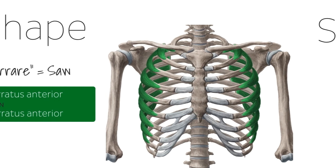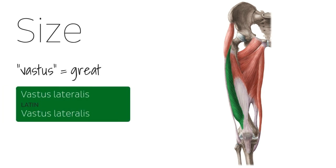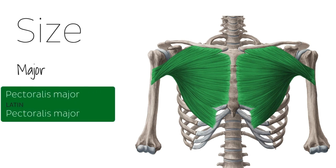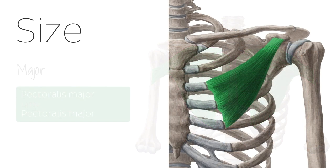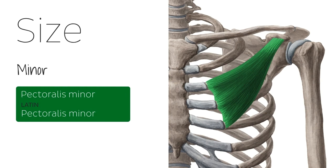In many cases, muscles derive their names from the size of the muscle. Such terms used to denote the size include vastus, which comes from the Latin for great — for example the vastus lateralis muscle. The term major is used to describe how large a muscle is, usually in comparison to another muscle, for example the pectoralis major muscle. In contrast, the term minor is used to describe a muscle that is the smaller of two similar muscles, as is the case of the pectoralis minor muscle.